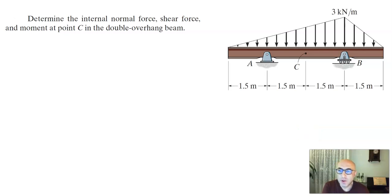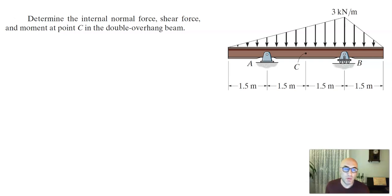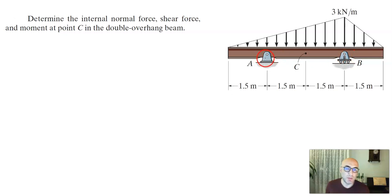We need to determine the internal normal force, shear force, and moment at point C in a double overhang beam. The overhangs are 1.5 meters on the left side and 1.5 meters on the right side. The mid-span is 3 meters from support A to support B. We have a simple support A and a roller support B, with a triangular distributed load on each overhang.